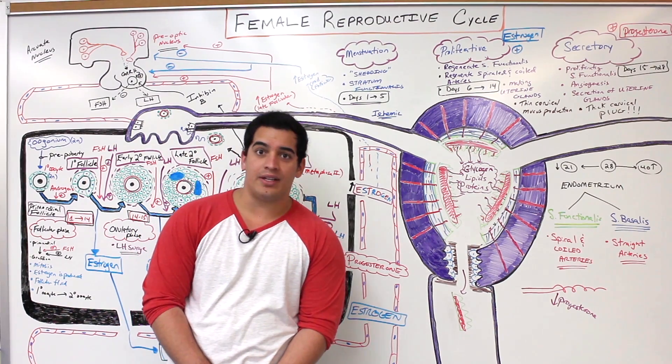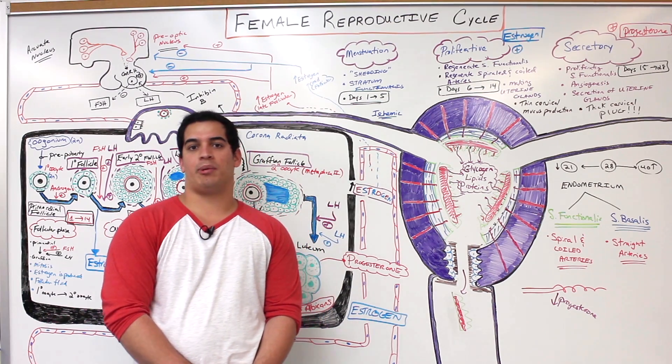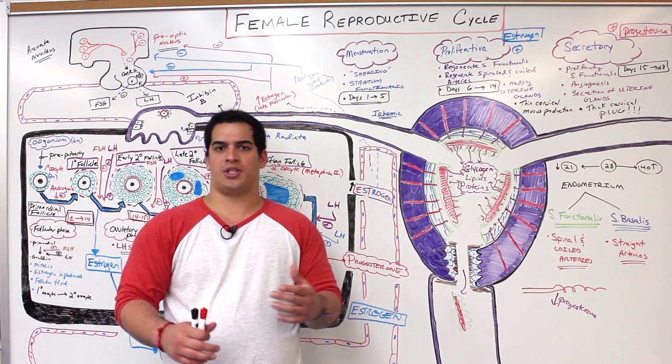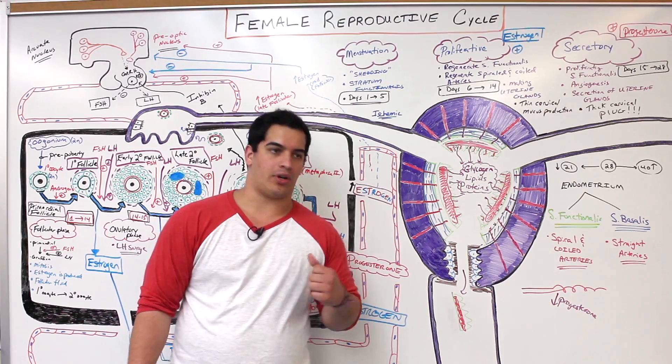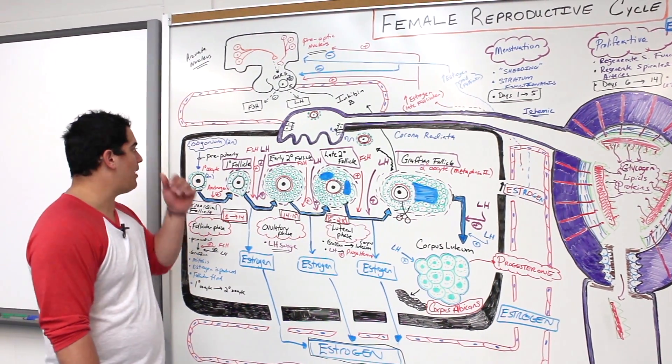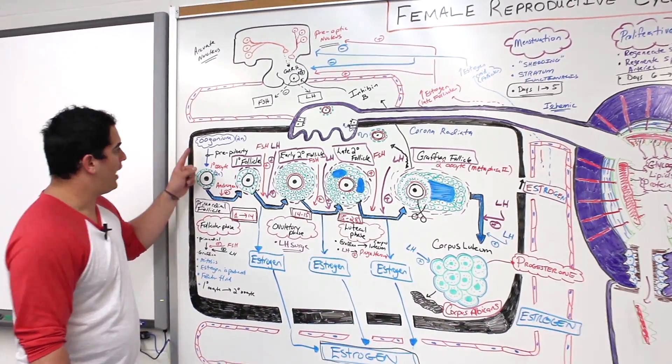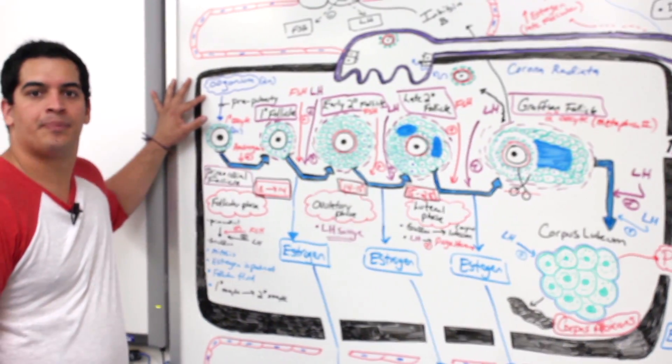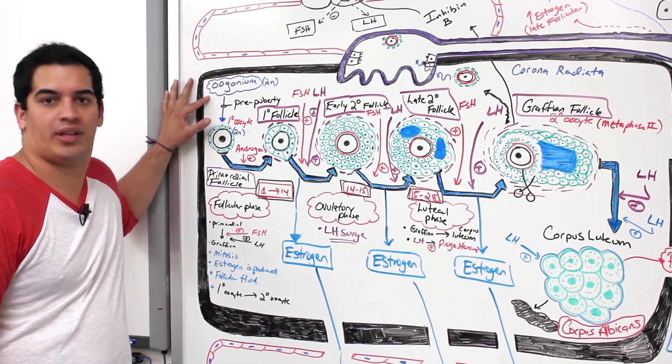Alright ninja nerds, in this video we're going to finish up and cover the female reproductive cycle. Just an overview since we've already gone over it in great detail. Let's do a nice little quick recap. If you remember, inside of the ovary we have a diploid parent stem cell, the oogonium, and you have all of these at birth that you're ever going to have for the rest of your life.